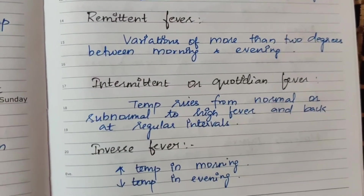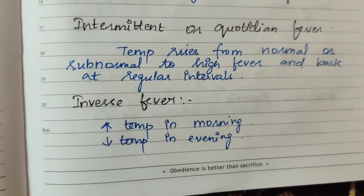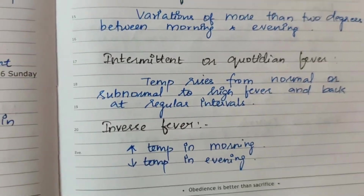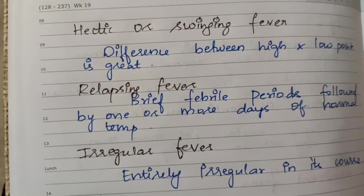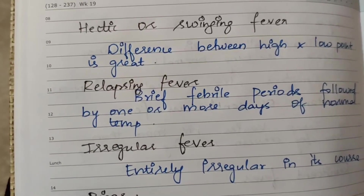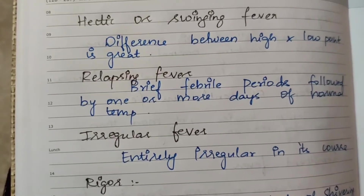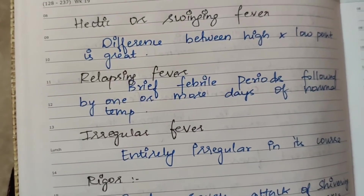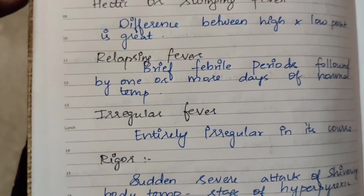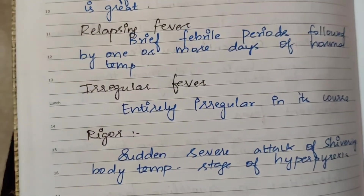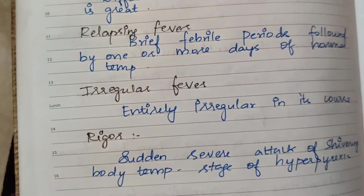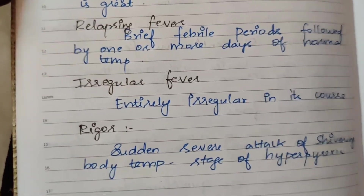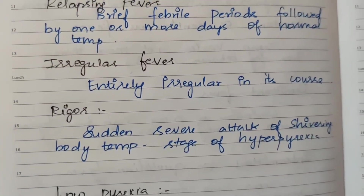Inverse fever — the difference between high and low temperature points is great, with morning temperatures lower than evening. Irregular fever is entirely irregular with no consistent pattern.